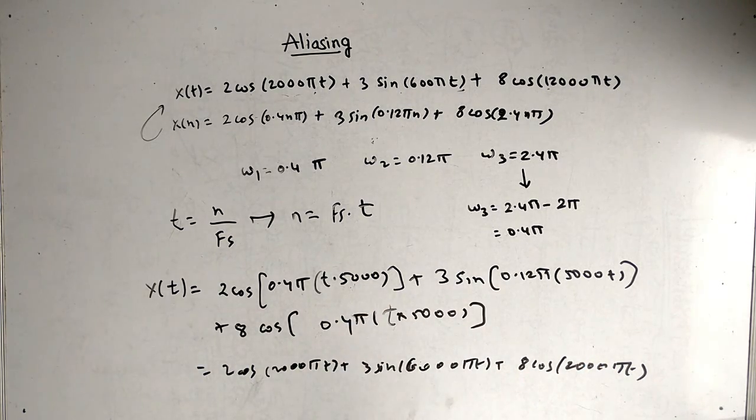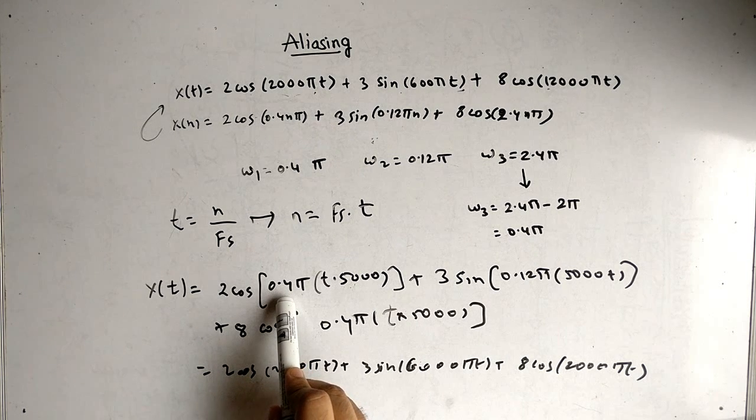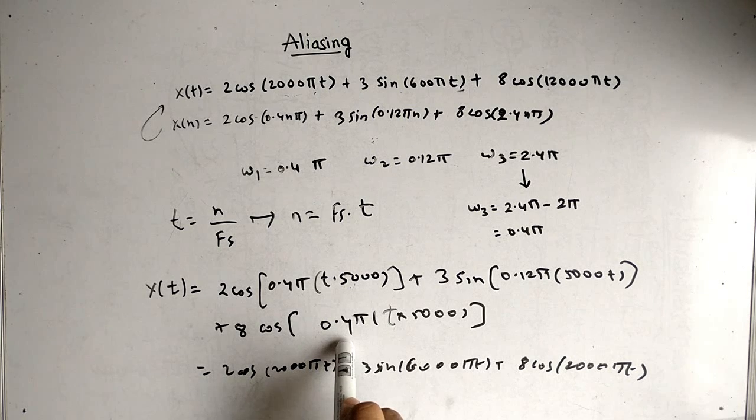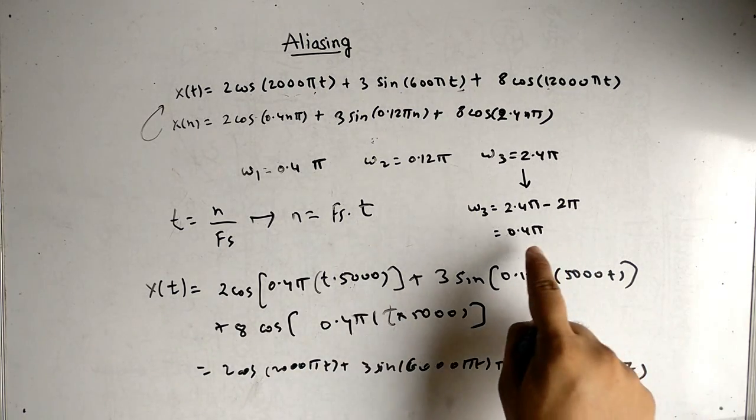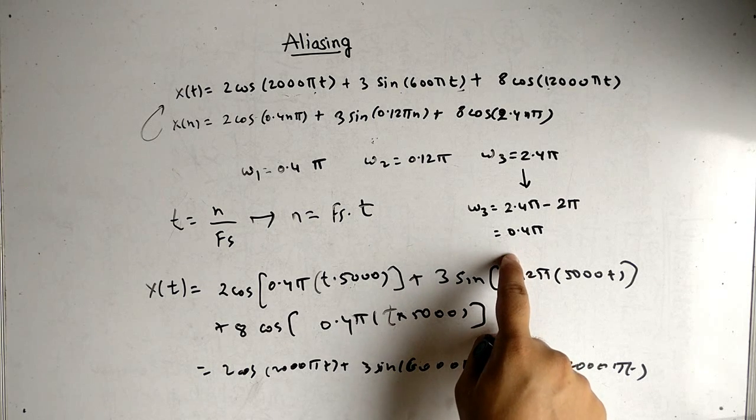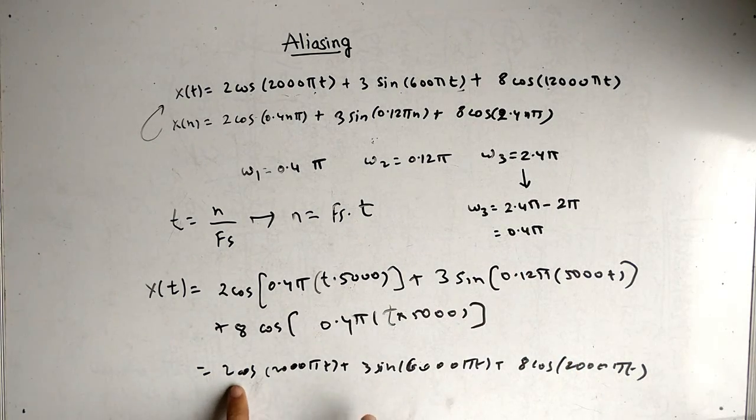First point: omega 1 is 0.4 pi, omega 2 is 0.12 pi. Whereas omega 3 is 0.4 pi. Because during reconstruction we can only reconstruct between minus pi to pi, so we converted this value. And after multiplication between them we get the final answer.